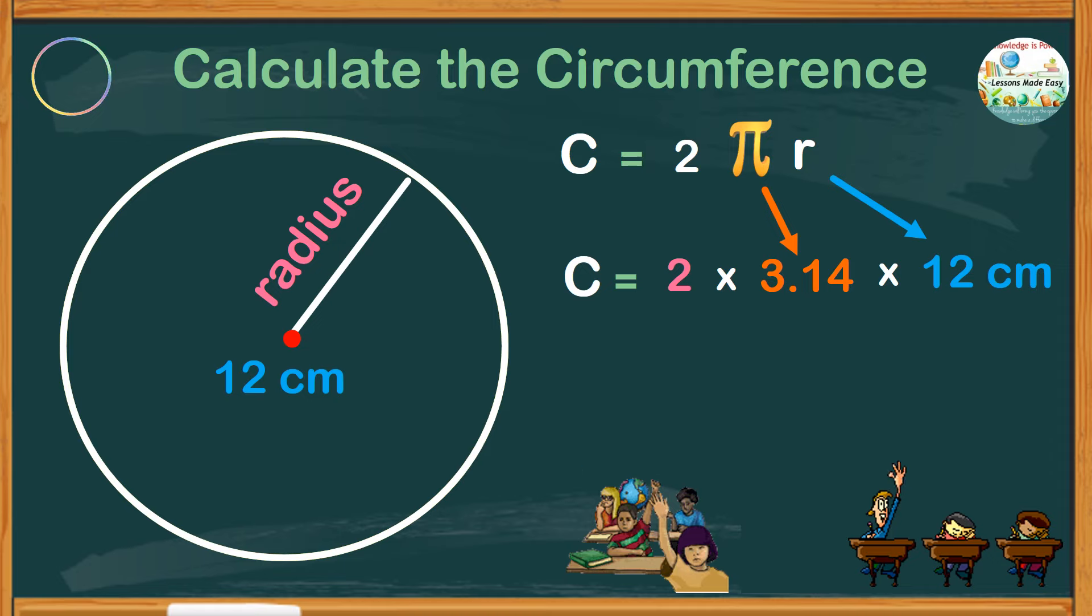Because we have three given quantities, we have to multiply the first two numbers, which is very small. 2 times 3.14 would give us 6.28, and then multiply this number by 12.